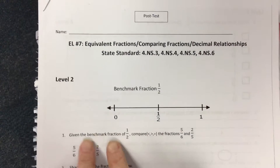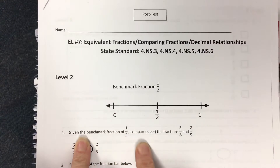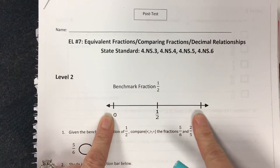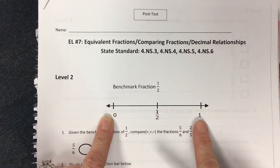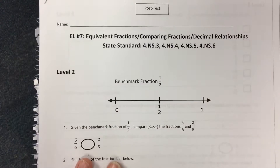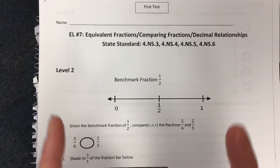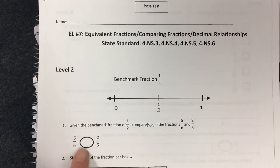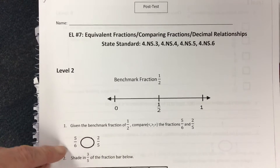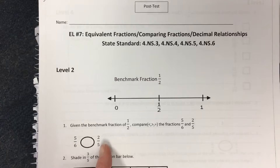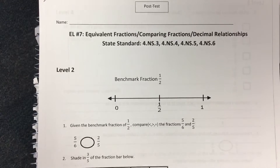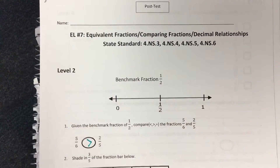The first question says, given the benchmark fraction of one-half, compare the fractions five-sixths and two-fifths. Above it, we have a number line showing zero, one-half, and one. A benchmark fraction is a fraction that we should be able to visualize. Five-sixths: half of six is three, so five-sixths is bigger than one-half. Half of five is two-and-a-half, so two-fifths is less than one-half. Therefore, five-sixths is greater than two-fifths.